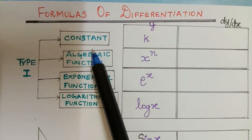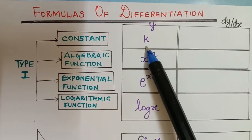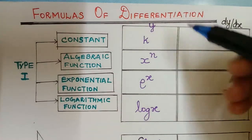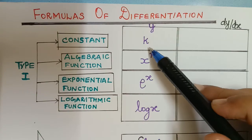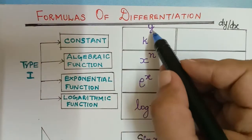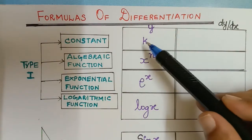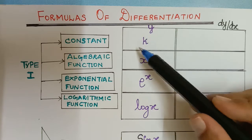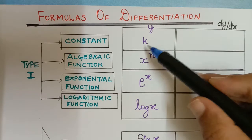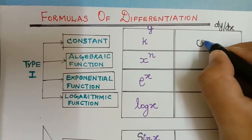Now we shall see what is the differentiation of a constant. We can take the constant as k, c, or anything. Here we are considering the constant k. The differentiation of a constant is always 0. So if y is equal to a constant k, without any function or variable along with it, then when we differentiate that constant, dy/dx will always be 0.